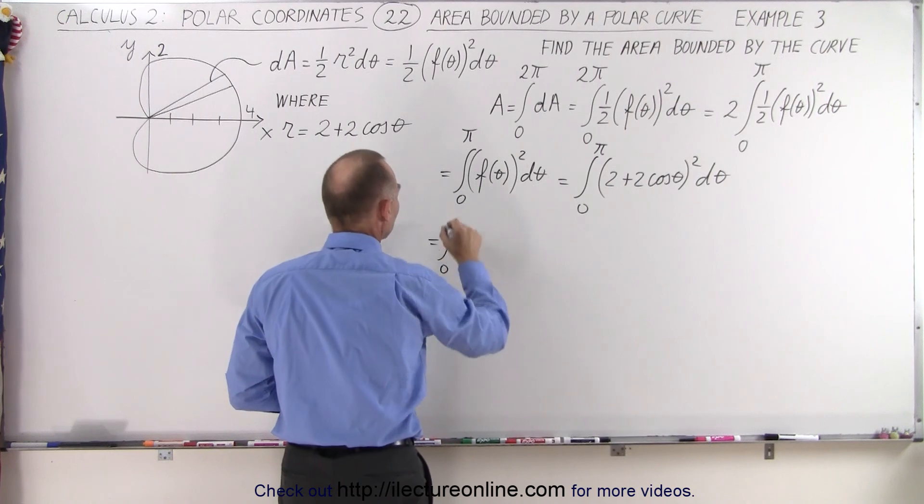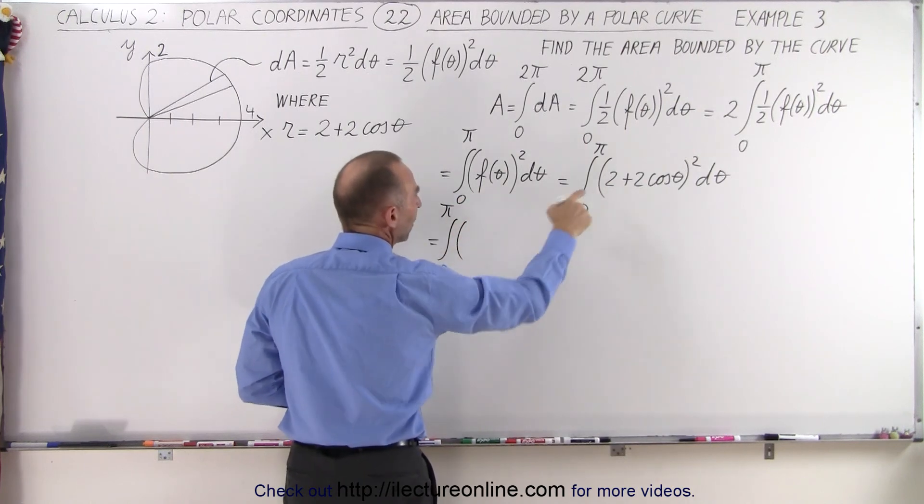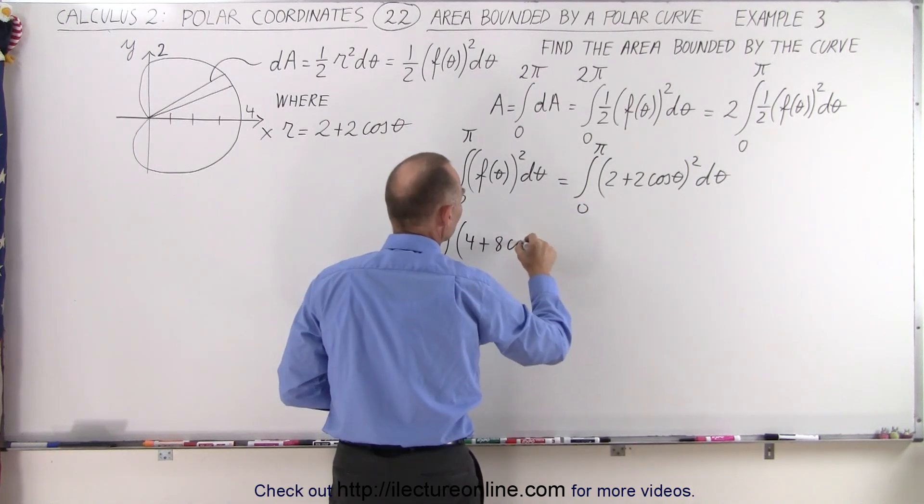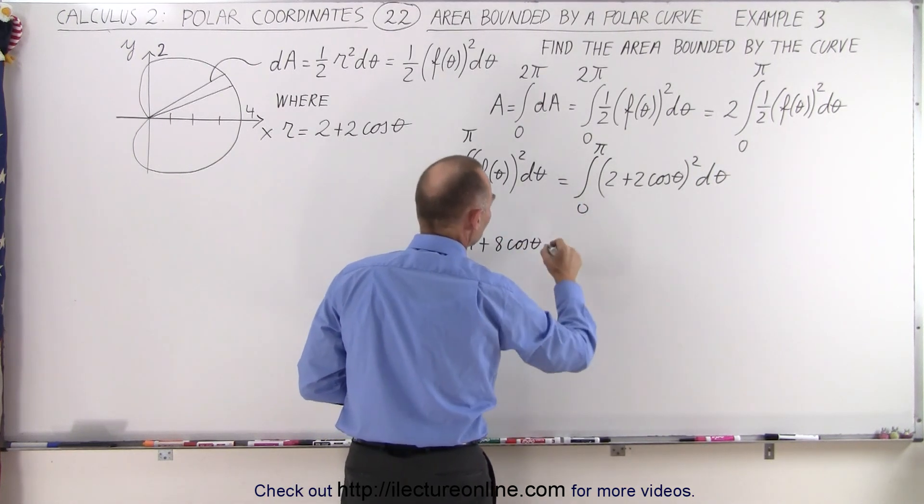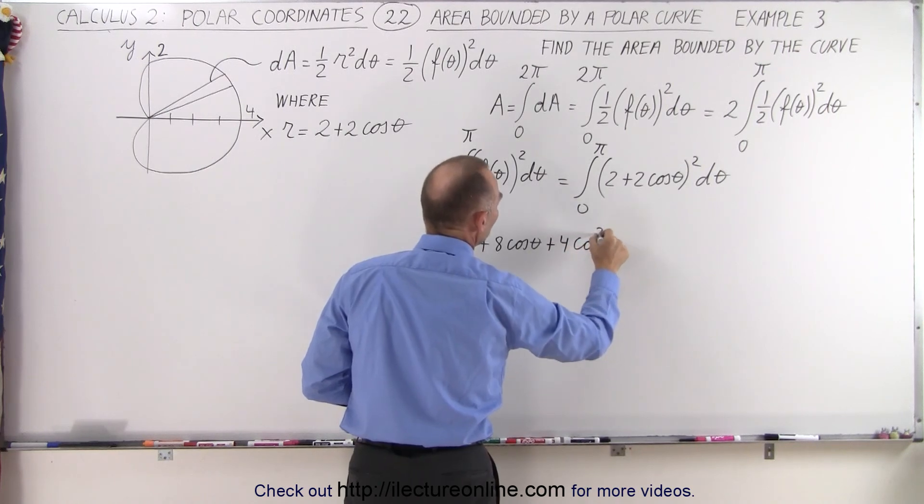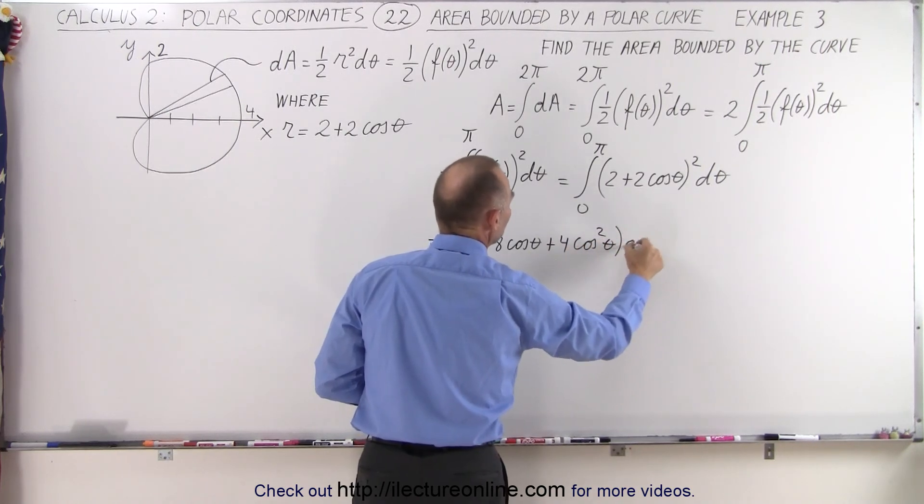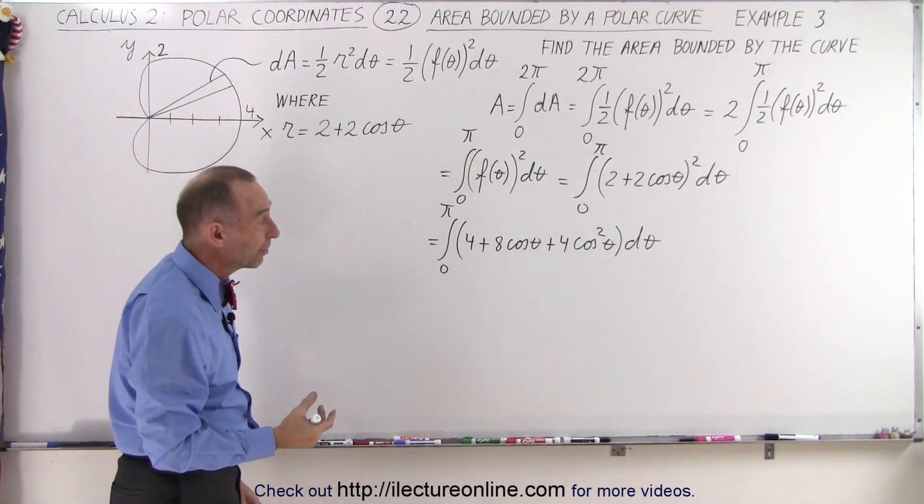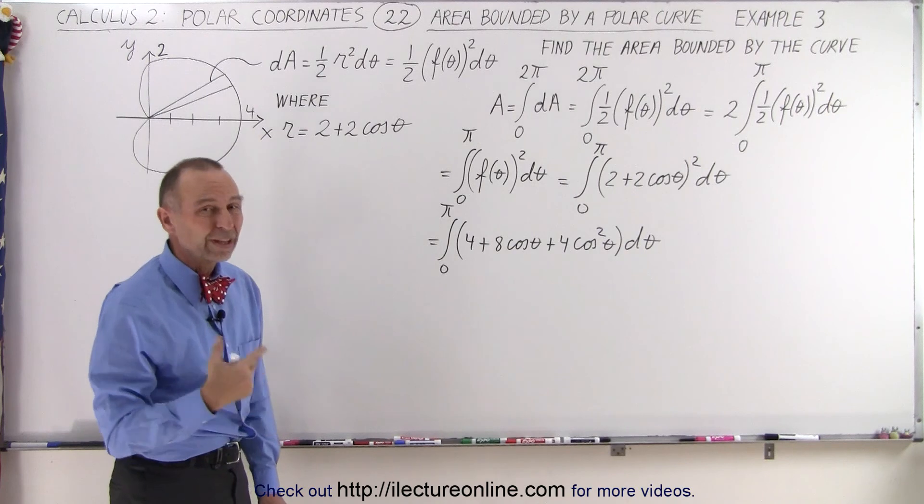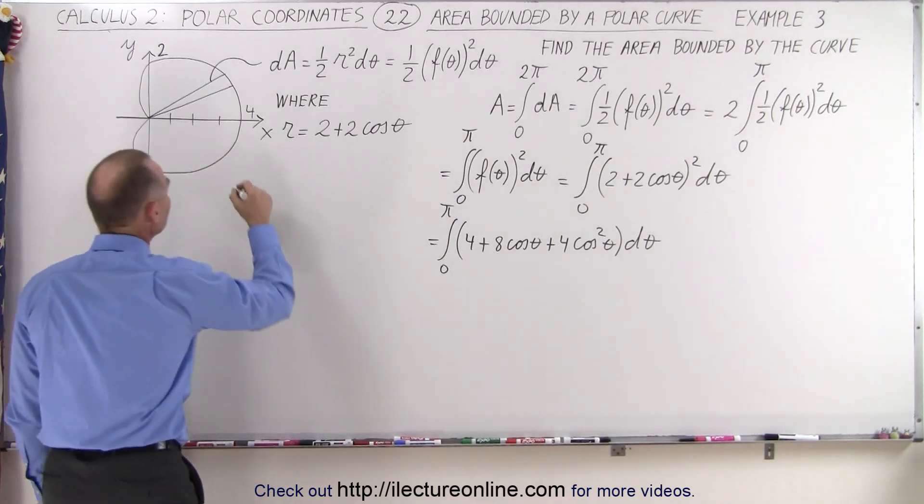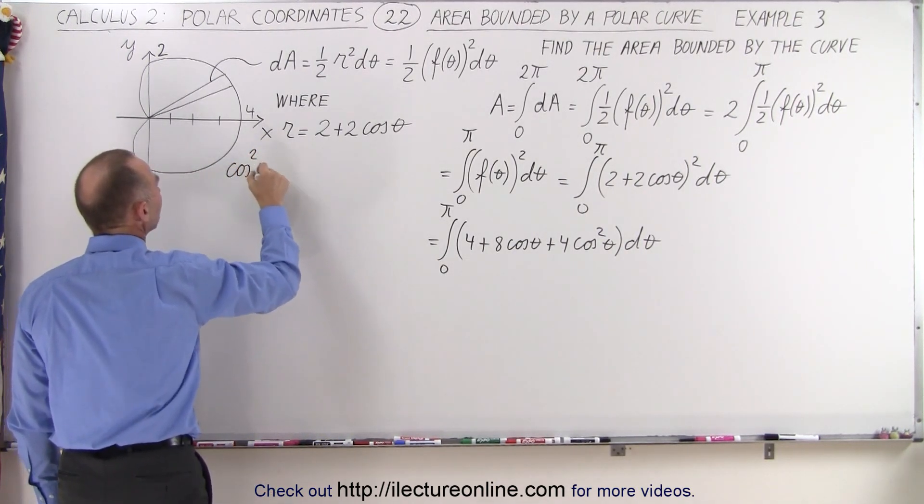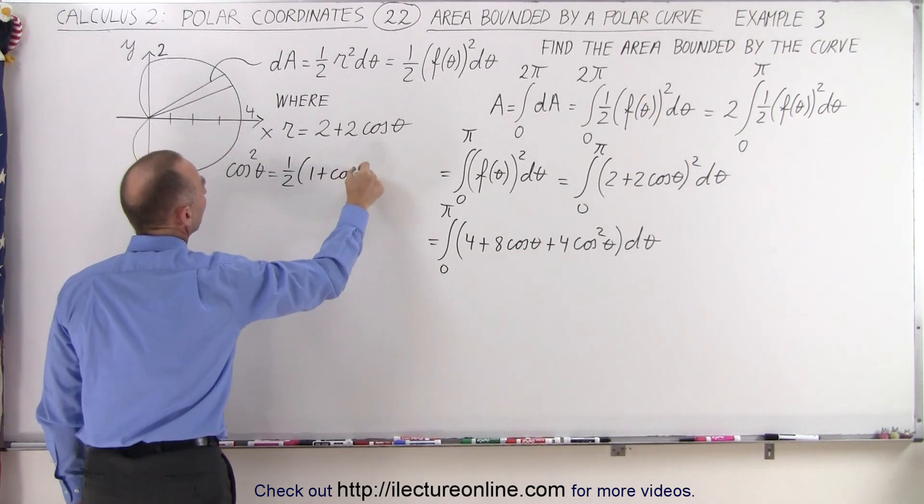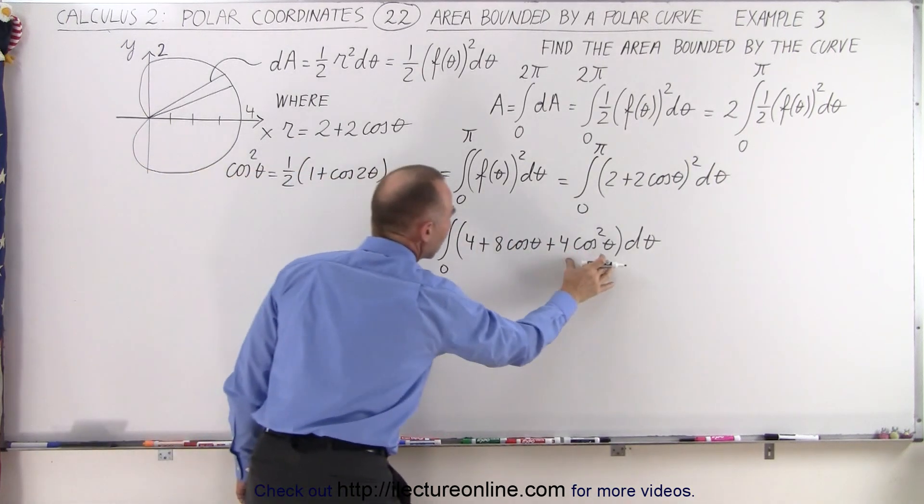So this is equal to the integral from 0 to pi of we have 4 plus twice the product of those two. That would be 8 times the cosine of theta plus the last term squared, which is 4 times the cosine squared of theta, and that would be d theta. So the first two terms are easy to integrate. The problem is that third term, cosine squared, so we need to use the identity that the cosine squared of theta can be written as 1 half times 1 plus the cosine of twice the angle.